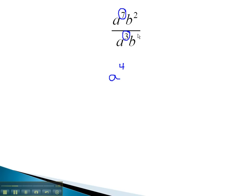With the b's, recalling that with no exponent we assume there is a 1, when we subtract 2 minus the 1, we get b to the 1st.